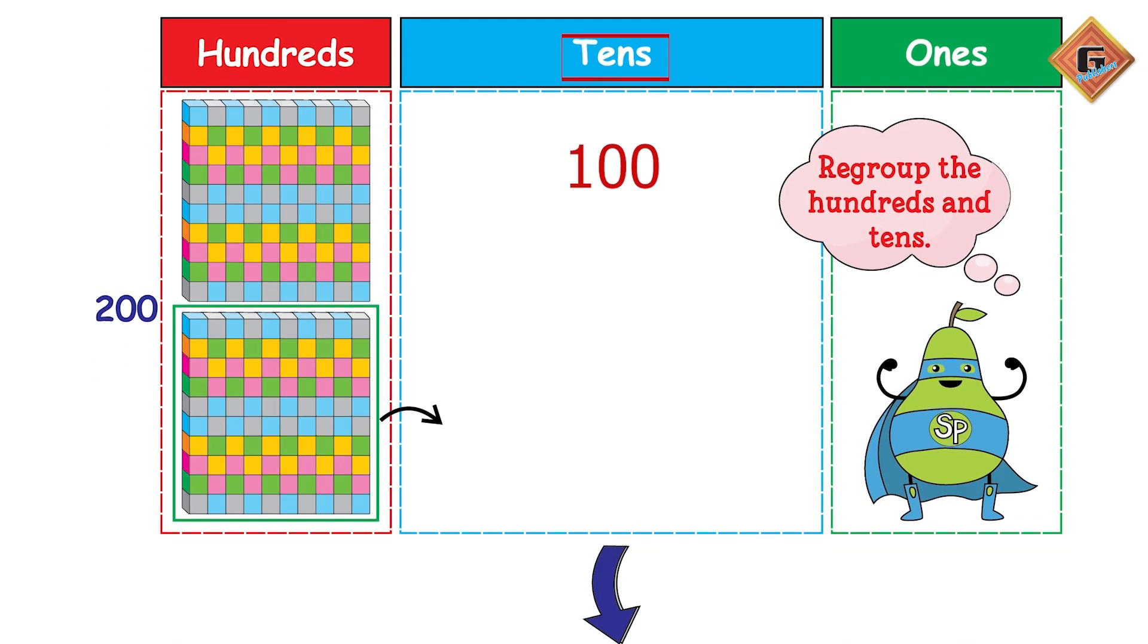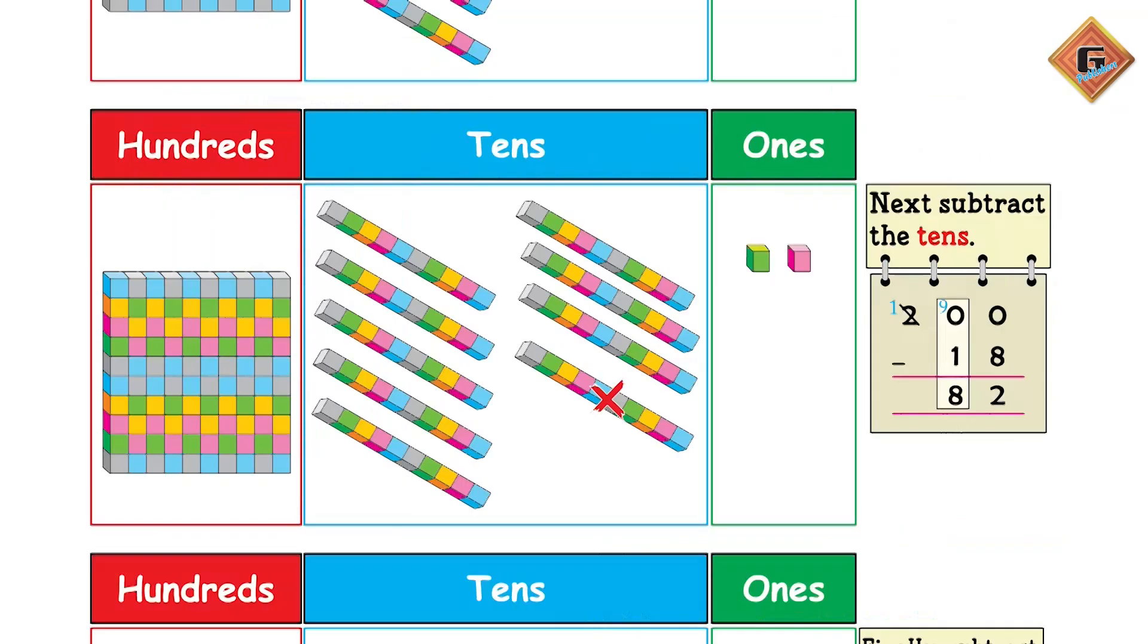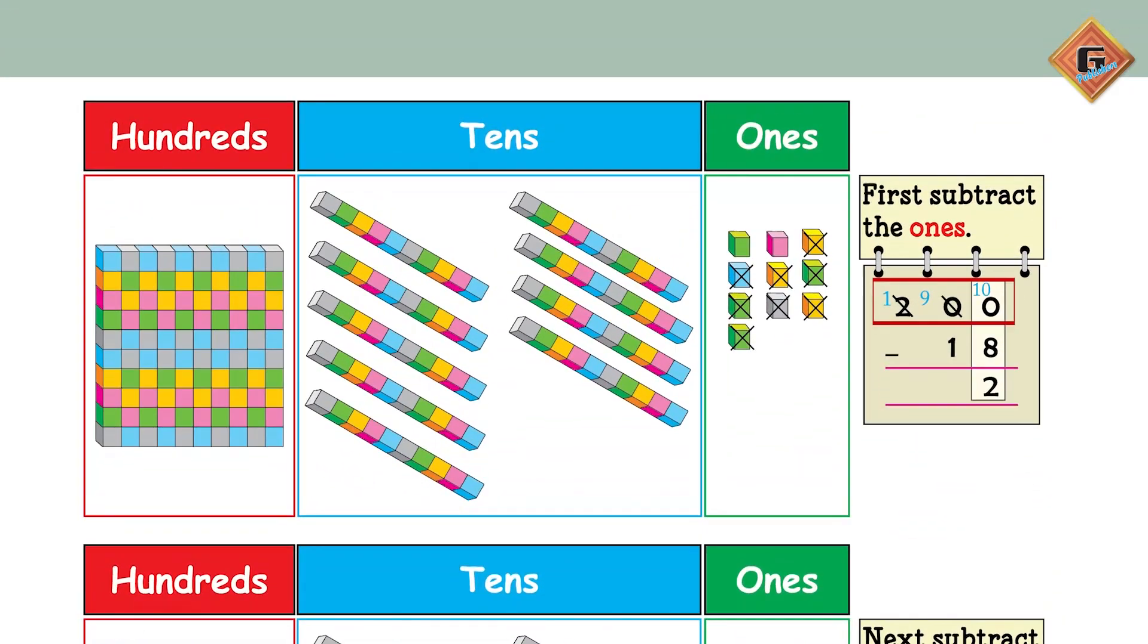When we regroup the hundreds into tens, one hundreds block becomes ten tens. Now regroup the tens and ones. You have to regroup the tens into ones.